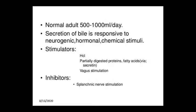Stimulators of bile secretion include HCl, partially digested proteins, fatty acids, secretin, and vagus nerve stimulation. Neurogenic stimulation is chemical in nature, while HCl acts as a hormonal stimulus via protein digestion. The inhibitor of bile secretion is splanchnic nerve stimulation.